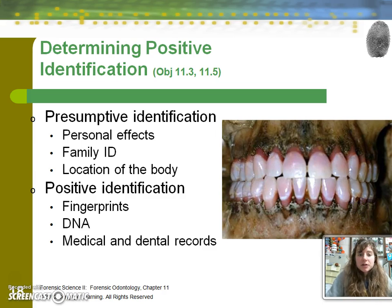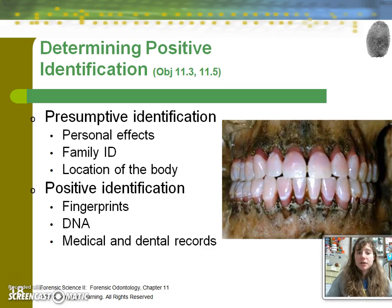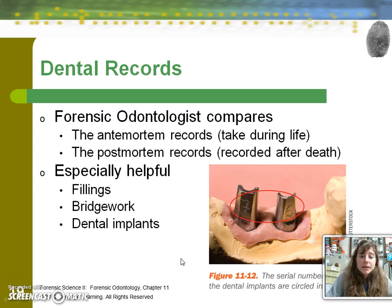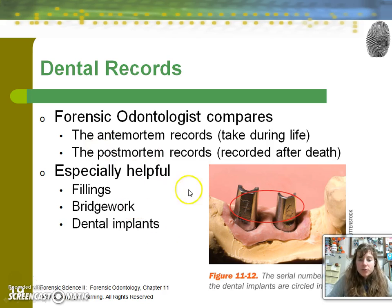In making a positive identification, there are two types: presumptive, which can rely on personal effects or identification on the body, family ID, or location; and positive ID, which can be done with fingerprints, DNA, and medical and dental records. Forensic odontologists compare ante-mortem records with post-mortem records, and any dental work that was done is really helpful — fillings, bridge work, and dental implants, which have serial numbers.